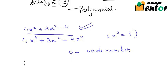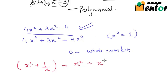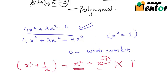How about x² + 1/x? We can rewrite this as x² + x⁻¹. Here the exponent of x in the first term is 2, which is a whole number. But in the second term, the exponent is -1, which is not a whole number — it is an integer but not a whole number. So this expression does not classify as a polynomial.